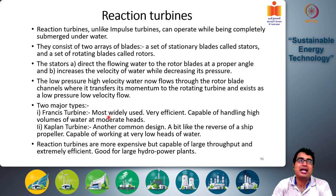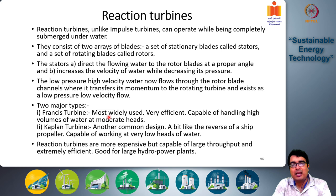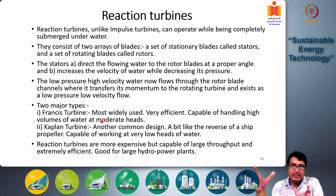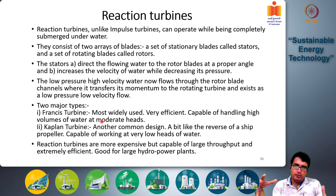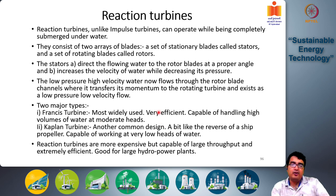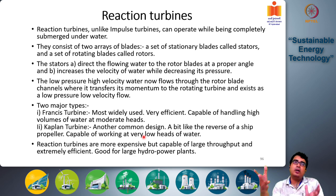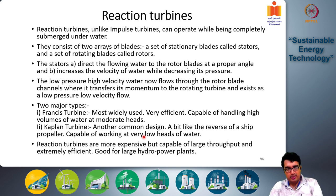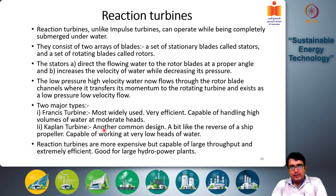The Francis turbine is the most widely used type in large hydropower plants. It is very efficient and capable of handling high volumes of water at moderate heads. One of the advantages of reaction turbines is they can handle large volume flow rates of water, and the Francis turbine specifically can handle very high volume flow rates at relatively moderate heads — even heads lower than what Pelton turbines can handle — at very high efficiency.